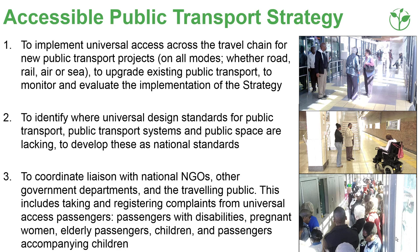The accessible public transport strategy contains three key areas of implementation: to monitor municipalities; to measure success against national standards or review national standards, and to develop them where there are gaps; and to work with affected passenger groups and to take complaints where access for them is problematic.